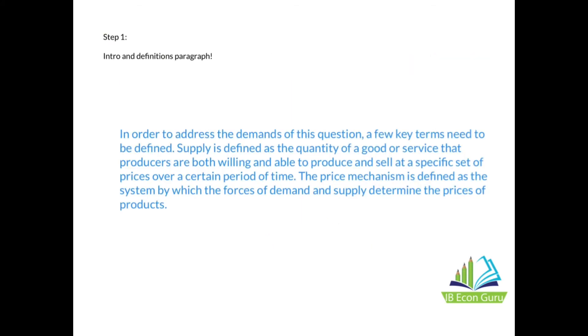For those who've been paying attention in this series, I always start with an introduction and definitions paragraph. All econ teachers advise you to start by introducing and defining the key terms. I wrote something like: In order to address the demands of this question, a few key terms need to be defined. Supply is defined as the quantity of a good or service that producers are both willing and able to produce and sell at a specific set of prices over a certain period of time. The price mechanism is defined as the system by which the forces of demand and supply determine the prices of products. I only defined these two—please don't feel the need to define every single key term you're going to use in your essay because it's a waste of time. You don't actually get marks for your definitions; you get marks for how well you use these key terms in the essay.